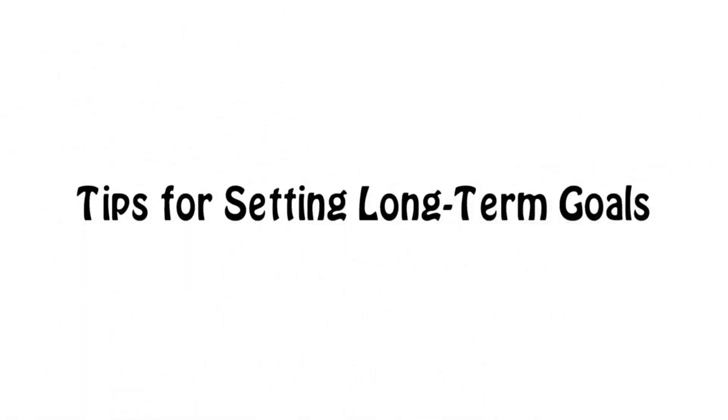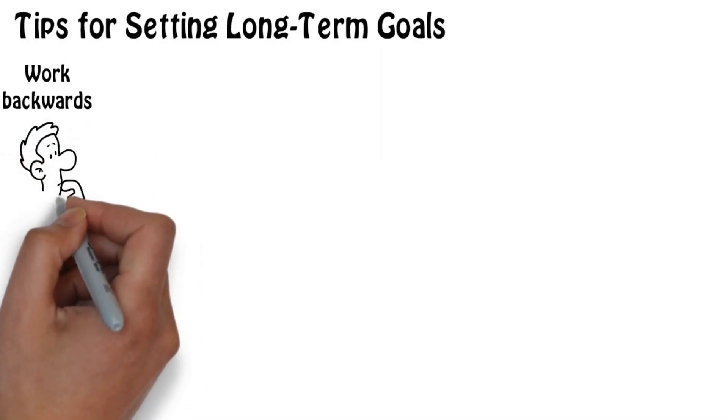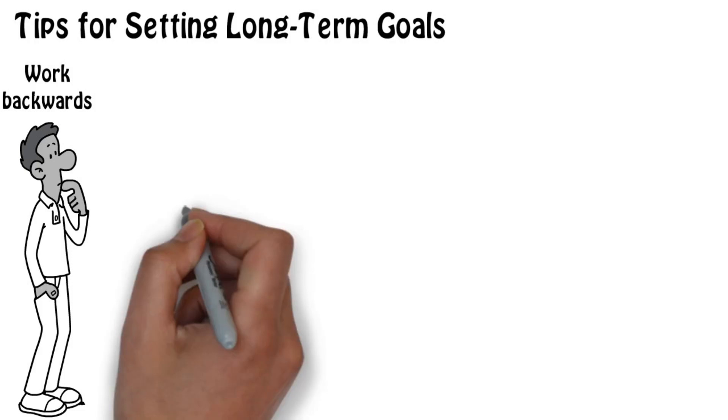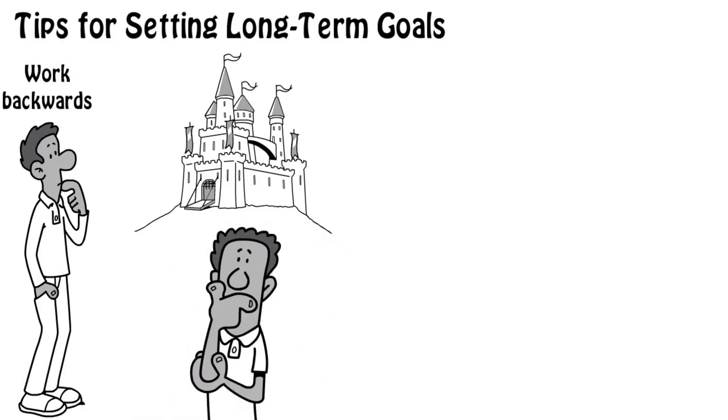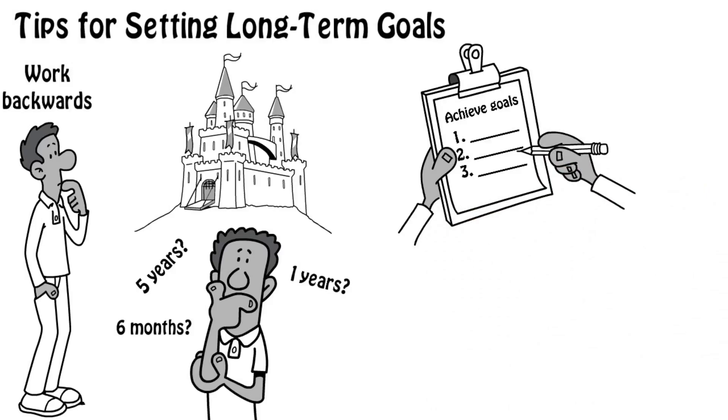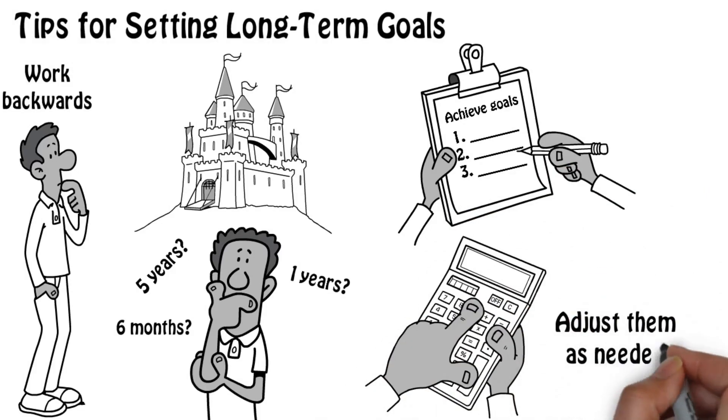Tips for setting long-term goals: Work backwards. Think about what you want to achieve, then plan steps going back to what you can do right now. Create a picture of where you want to be in life 10 years from now. Think about what you need to do in five years, in one year, in six months, to make it as obtainable as possible. Write down what you need to do each month to achieve that goal. After each monthly goal is achieved, look at your goal and adjust them as needed.